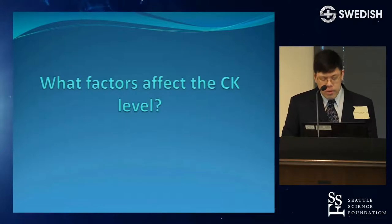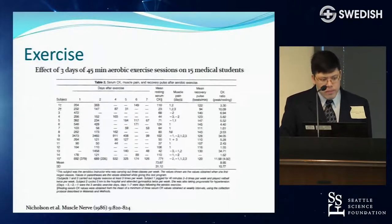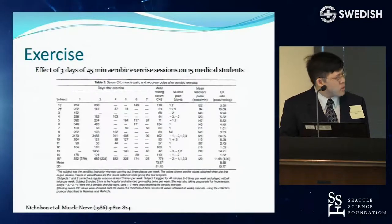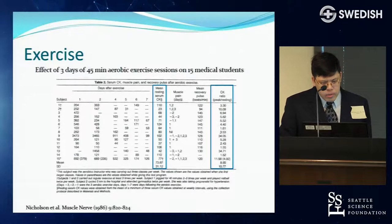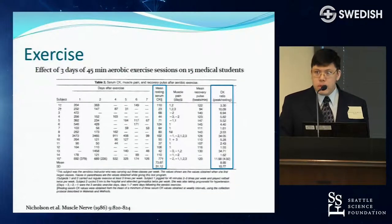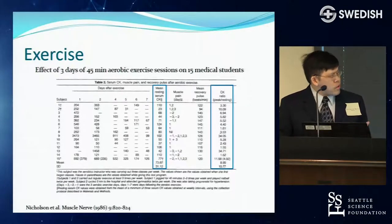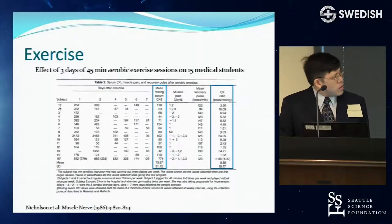A common factor affecting CK is exercise. In 15 healthy medical students doing just three days of 45-minute aerobic exercise, median resting CK was around 100, but after exercise all of them had increased CK — ranging from 1.5 times baseline up to 34-35 times baseline. So even low levels of exercise can drastically affect CK, even in normal people.